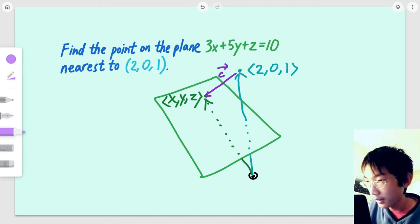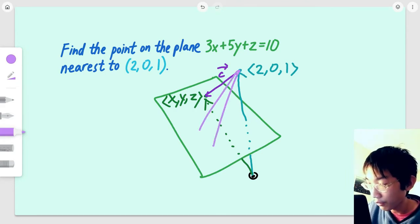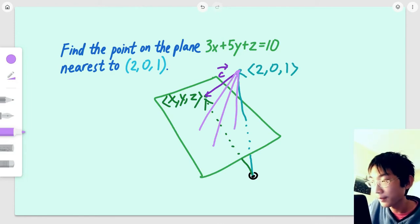For example, we know that c has to be a line that goes from (2, 0, 1) to the plane, and has to be the shortest line at that. If you can imagine, we can draw multiple lines that go from the point to the plane, and we want to find the shortest one. So, how do you find the shortest one? Well, when each of those lines touch the plane, they will form an angle with the plane.